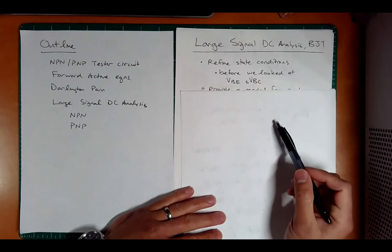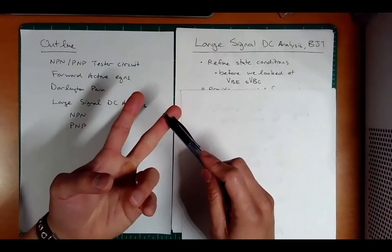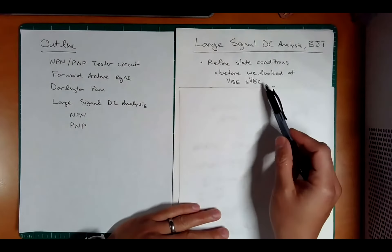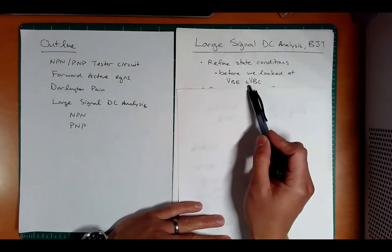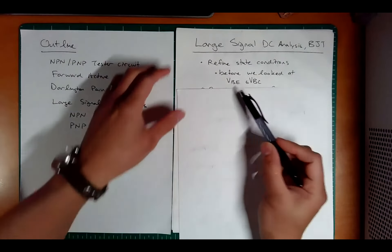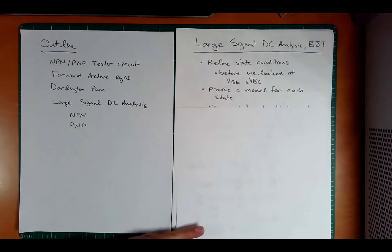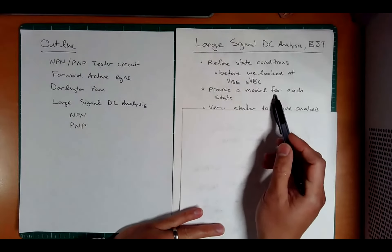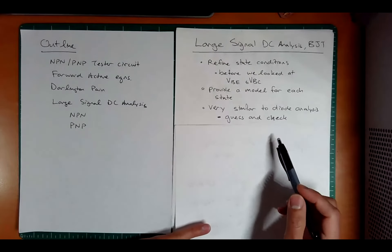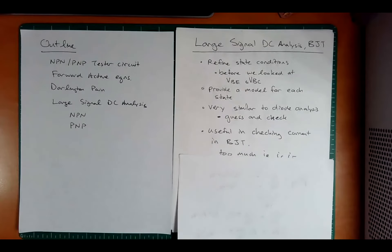This tool allows us to refine the state conditions. What are the states? Again, forward active, saturation, and cutoff. Before we looked at just VBE and VBC, the voltages across the B to E terminals and the B to C terminals. What we're going to be able to do is provide a new model for each state, and it's going to be very similar to the diode guess and check analysis.